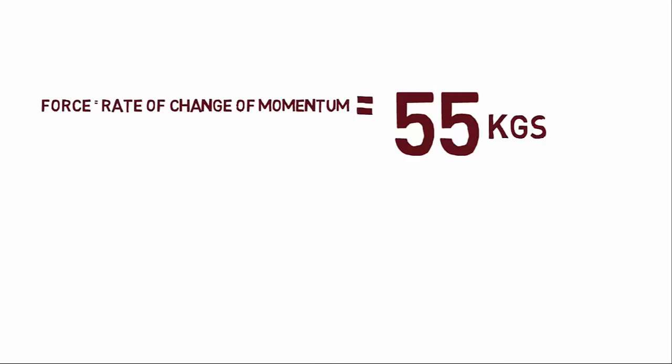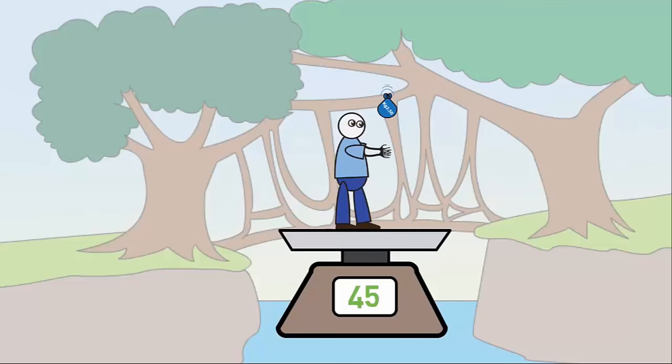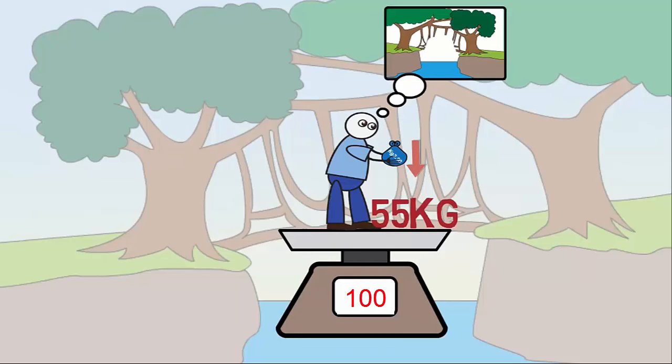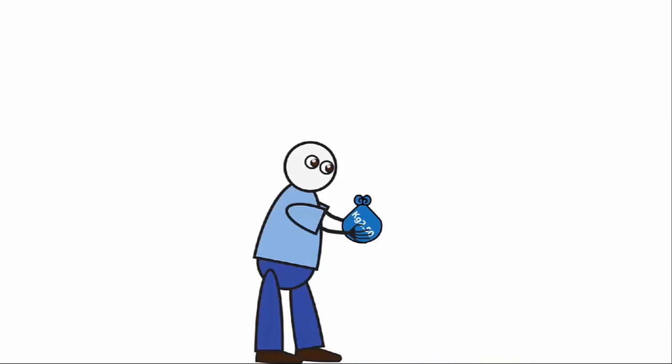So the total force on the bridge will be Gokul's weight of 45 kg and 55 kg in the process of catching the bag, and so the total force on the bridge will be 100 kg, twice the weight limit of the bridge. And that is why the bridge broke. The same happens when Gokul throws the bag.